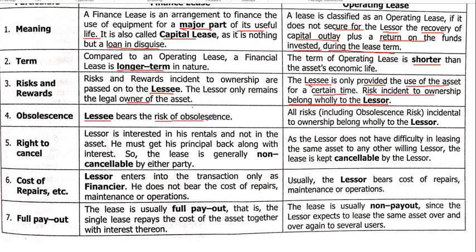Risk and reward: in a financial lease, the risk and rewards incidental to ownership are passed on to the lessee — the lesser only remains the legal owner. So Mr. Y says, I have given you the asset for 10 years — the asset is your responsibility. If something happens, it is your risk. The maintenance also comes to Mr. X because the asset has been given for long-term use. In an operating lease, the lessee is only provided the use of the asset for a certain time, and the risk incidental to ownership belongs wholly to the lesser.